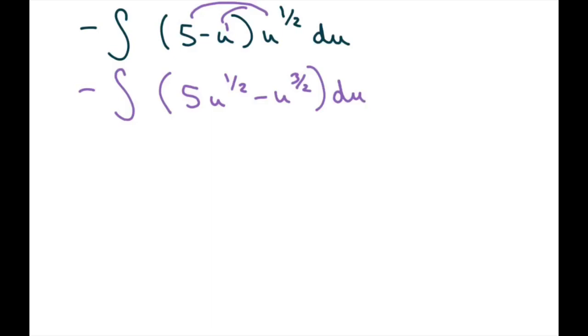Now evaluating the integral, we're going to bring out this negative. Negative 5 u, and then when you add one you're going to get three halves here, and you also put it here. So it's basically one plus one half which is three halves.